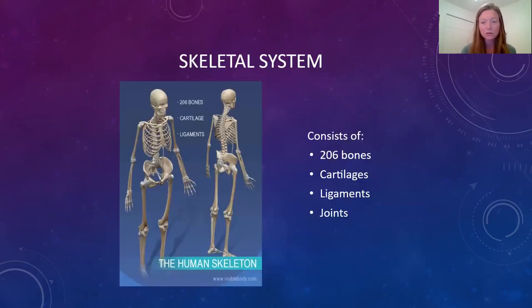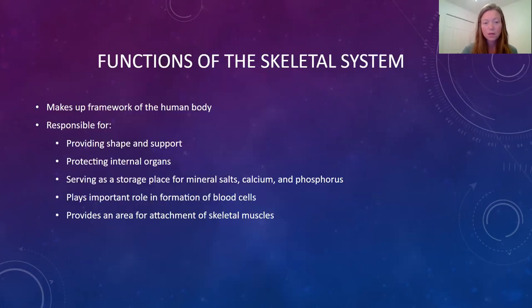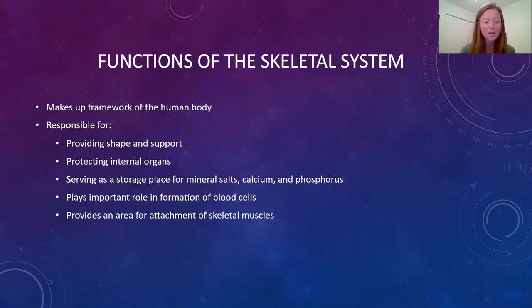Our skeletal system consists of bones, cartilages, ligaments, and joints. It provides the body with protection and support, protects internal organs, and provides a place for muscles to attach so that muscles can move our skeleton. One thing you want to remember for sure is that it's in our bones that blood cells are produced, minerals are stored, as well as fat and excess calcium. Don't forget that the bones produce our blood cells.